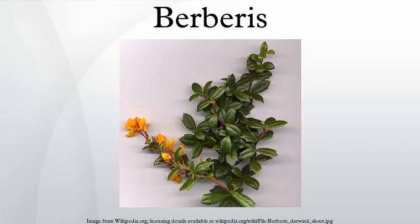Only on young seedlings do leaves develop on the long shoots, with the adult foliage style developing after the young plant is 1–2 years old. Many deciduous species, such as Berberis thunbergii or B. vulgaris, are noted for their attractive pink or red autumn color.